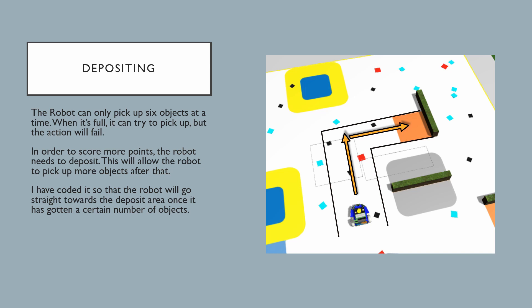Since the robot can only pick up six objects at a time, it is very important to deposit in order to score more points. This will allow the robot to pick up more objects after that. I have coded it so that the robot will go straight towards the deposit area once it has gotten a certain number of objects.